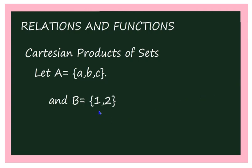Now, to find A cross B, I will represent this pictorially. Let us take set A as three different houses and set B as two different offices. So a, b, c are three different houses, and 1 and 2 are two different offices. Let us represent it in a diagram.